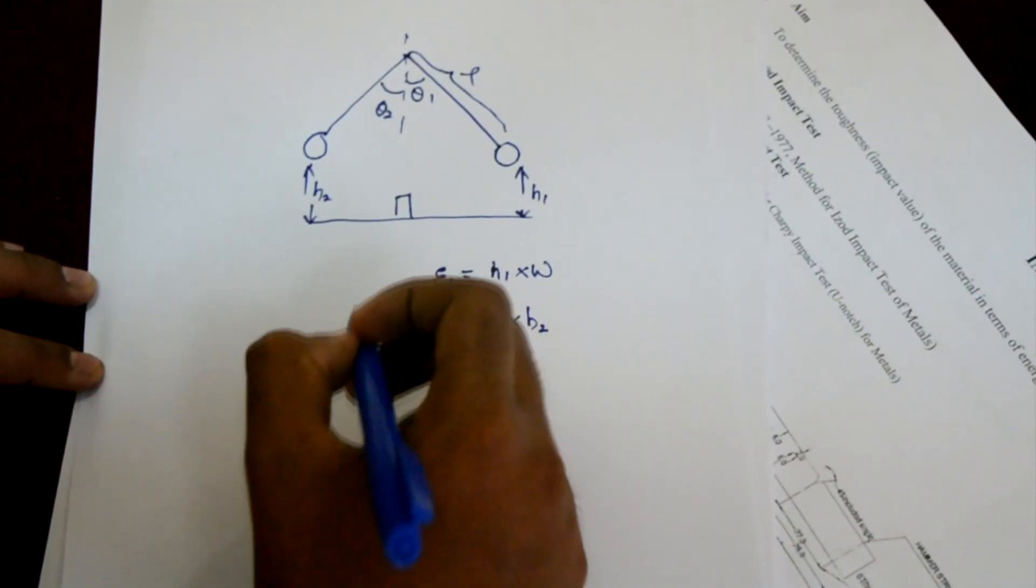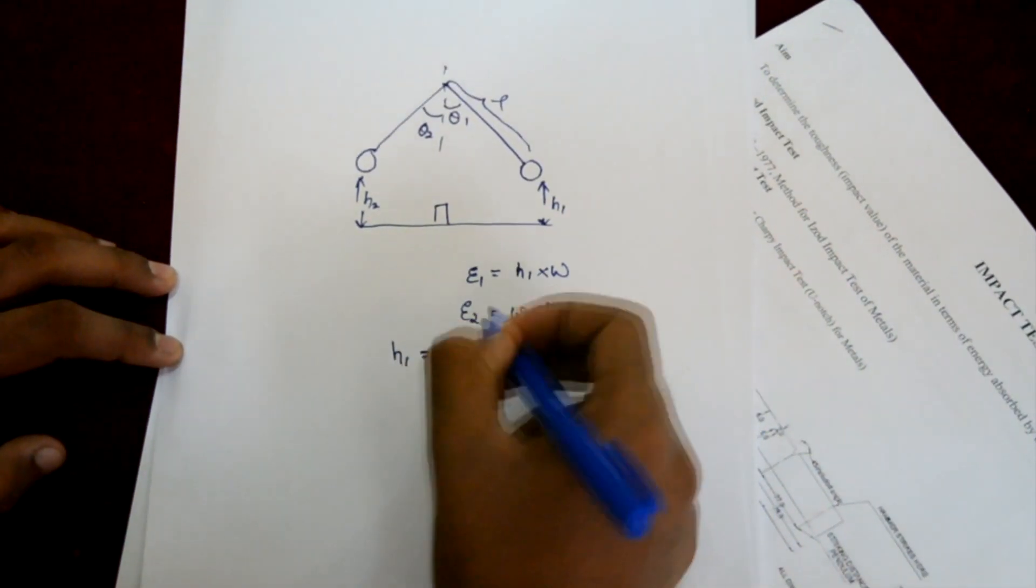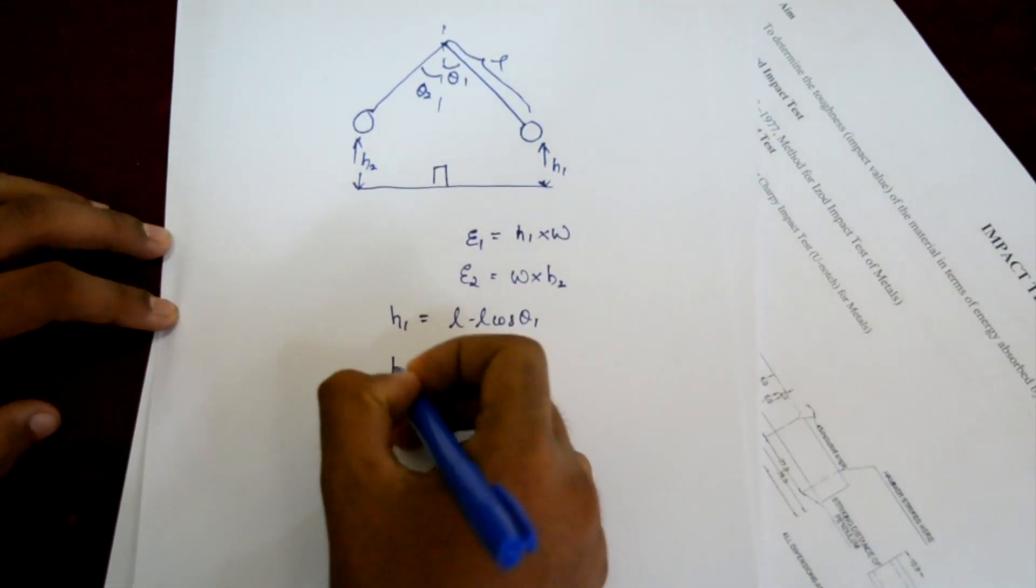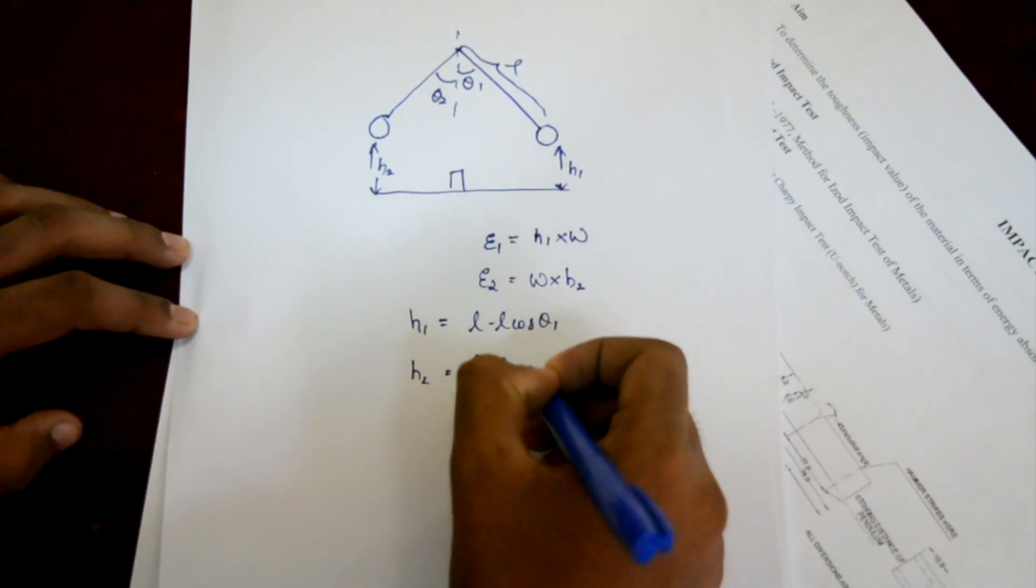From the figure, we can see that H1 is equal to L minus L cos θ1 and H2 is equal to L minus L cos θ2.